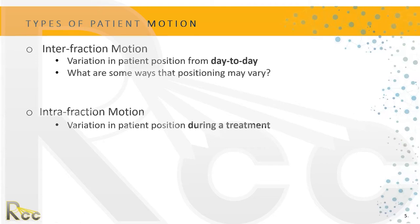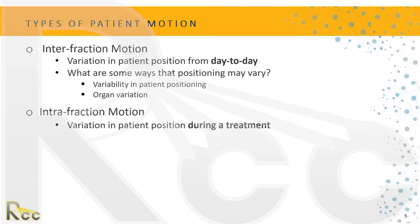What are some of those variations? We can have variability in patient positioning itself — say we set the patient up perfectly, then leave the room and they relax their arm or their pelvis. That's a variation from day to day or field to field. There's also organ variation: if they ate a big sandwich, their stomach is fuller, digestion moves things around — that's all organ variation.